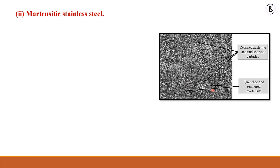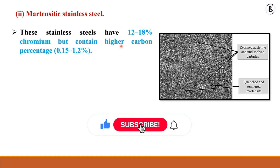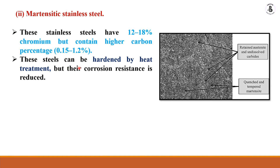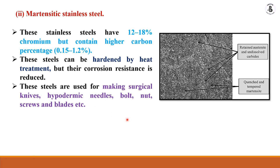After quenching, a tempering process is applied for rearrangement of the structure, while maintaining the basic martensitic structure. Tempering can be high temperature, medium temperature, or low temperature depending on the existing structure. These stainless steels contain 12 to 18 percent chromium and a high carbon percentage — up to a maximum of 1.2 percent carbon. The higher carbon content increases hardness compared to ferritic stainless steels. These steels can be hardened by heat treatment, though their corrosion resistance is reduced. They are used for making surgical knives, hypodermic needles, bolts, nuts, screws, blades, and many more.